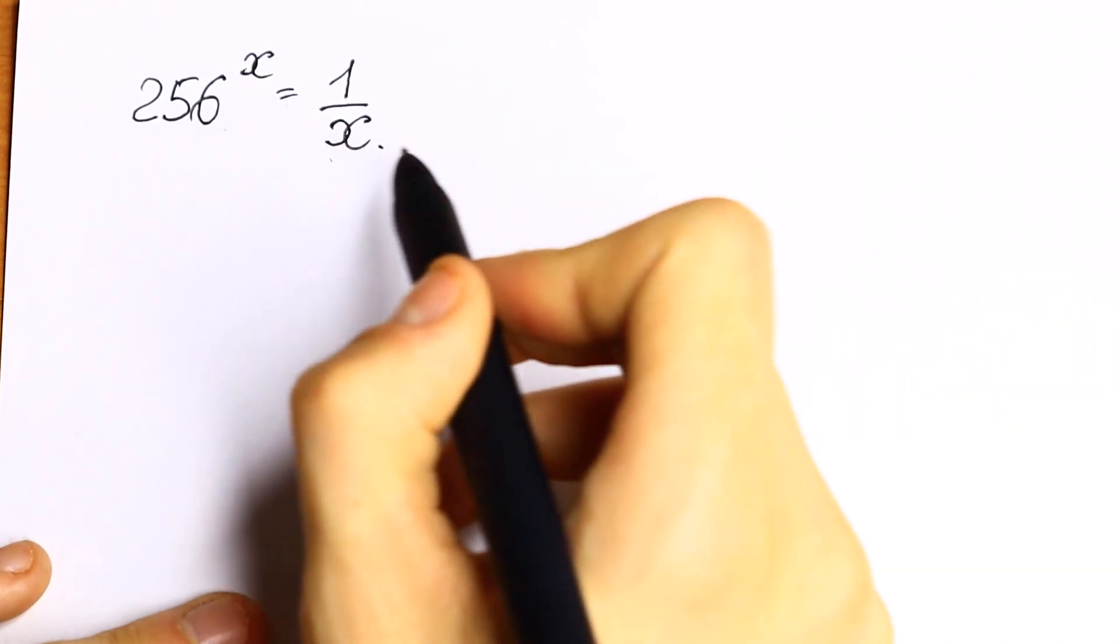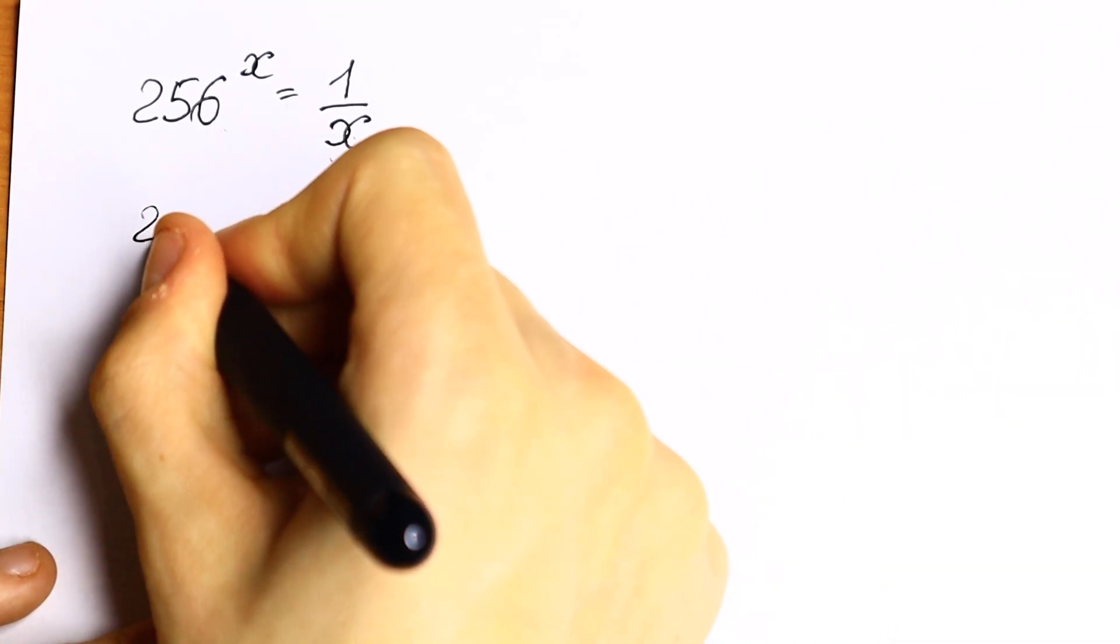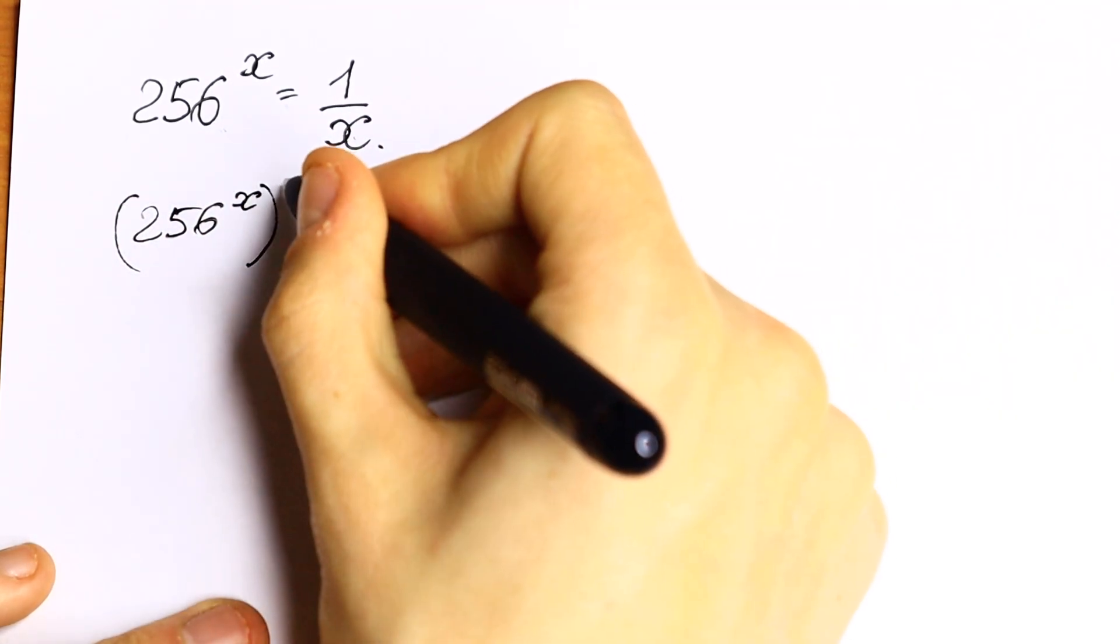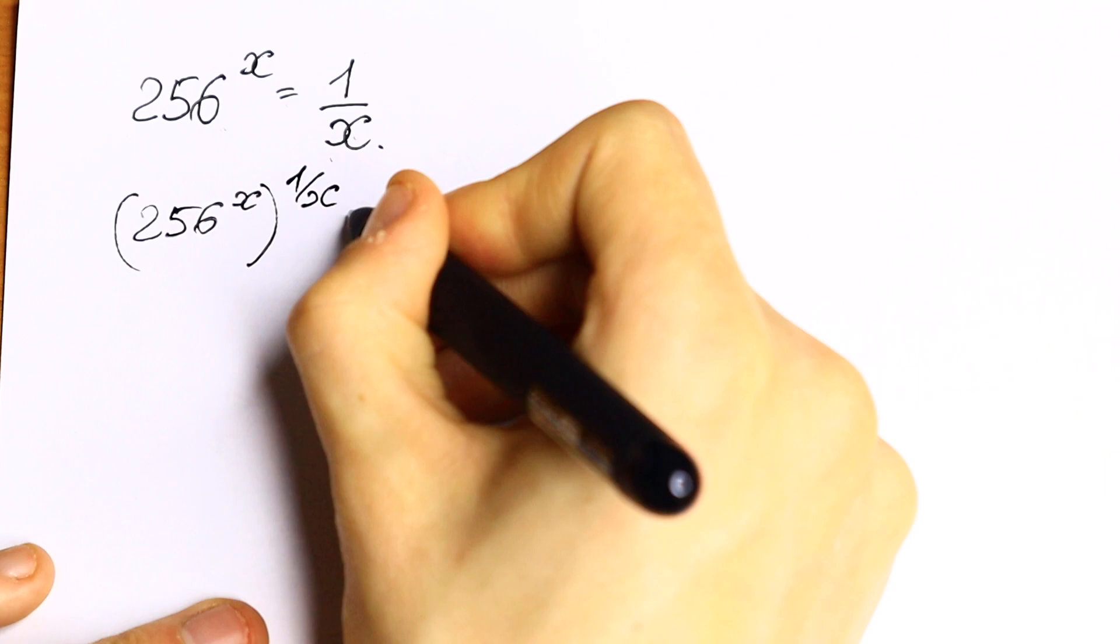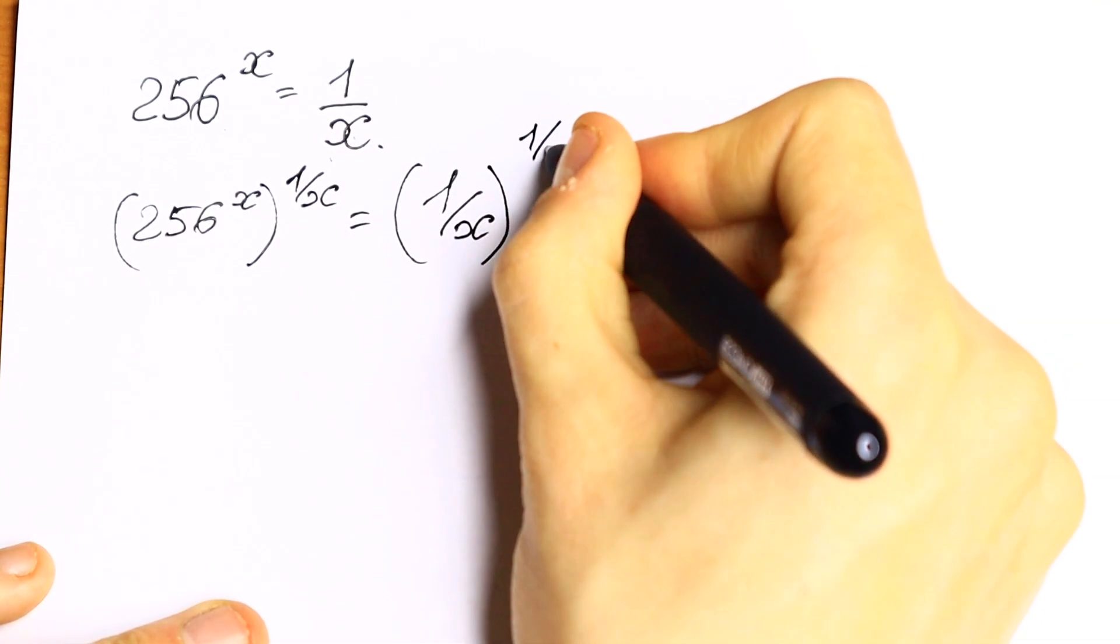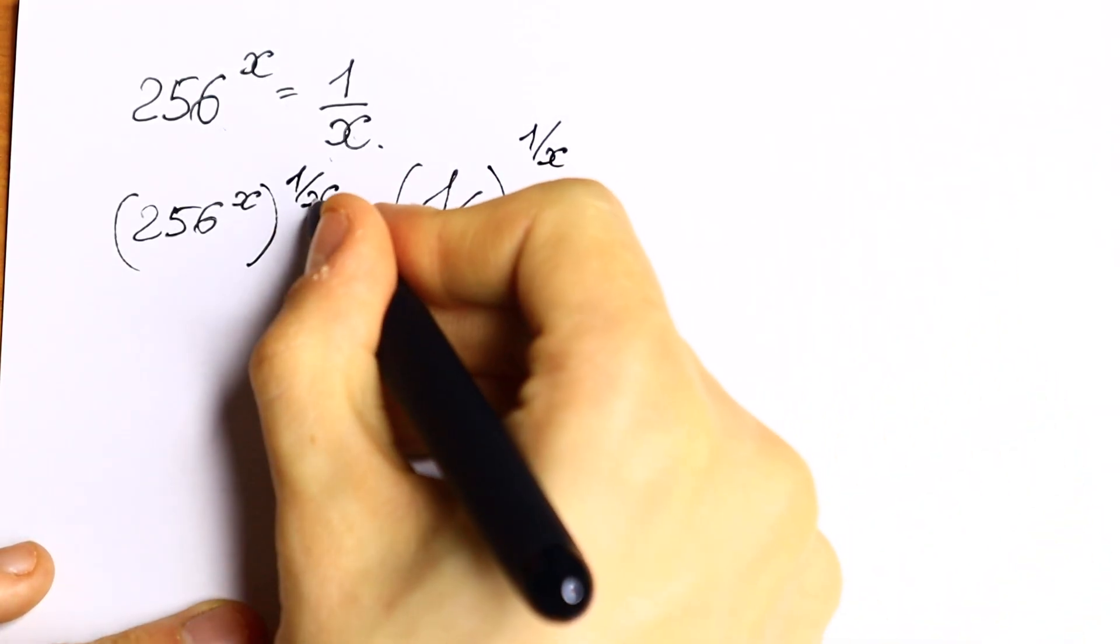If we raise both sides to the power 1 over x, we will have an interesting case. We will have that 256 to the power x raised to the power 1 over x, equal to 1 over x raised to the power 1 over x. So as you can see, we raise both sides to the power 1 over x.